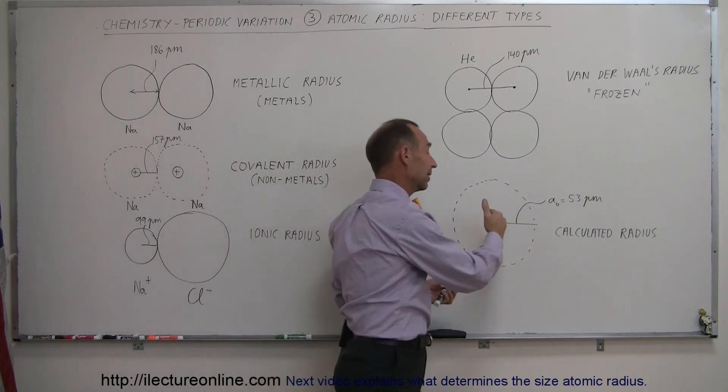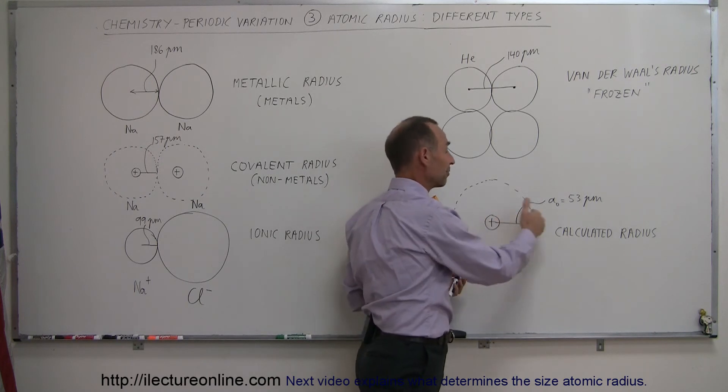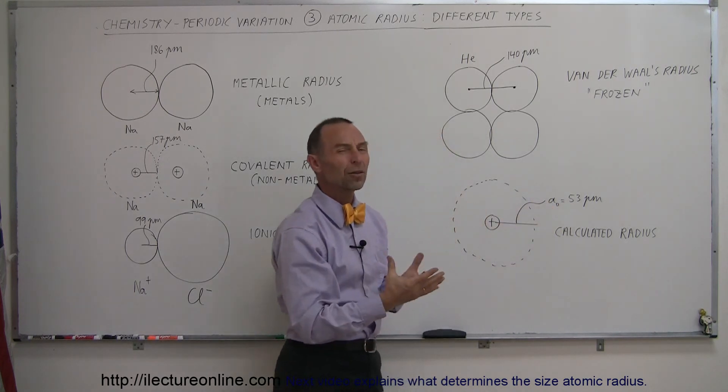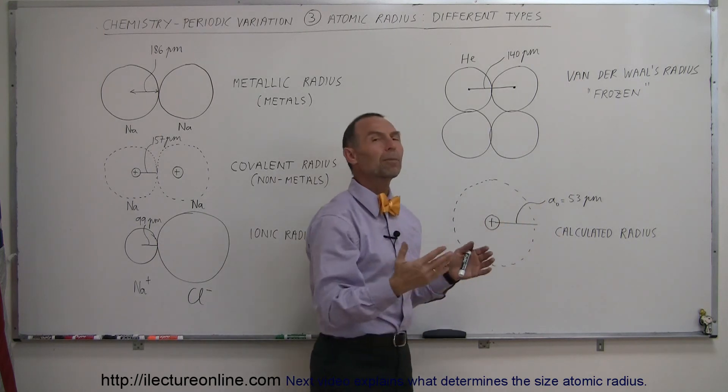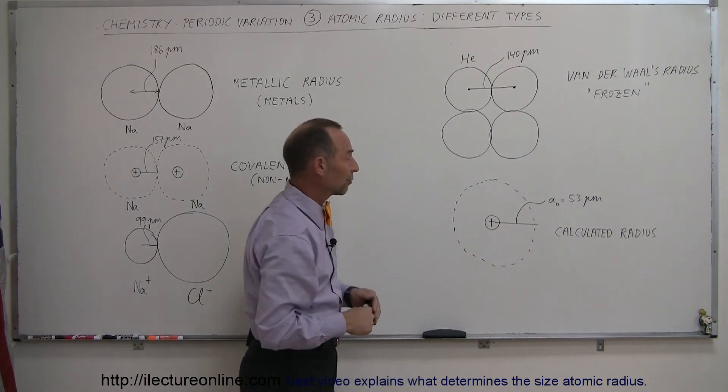But as we've seen, the electron can be further away, it can be closer. It's kind of like that fuzzy ball theory where it's kind of at that distance and that's the most probable radius of the atom at 53 picometers.